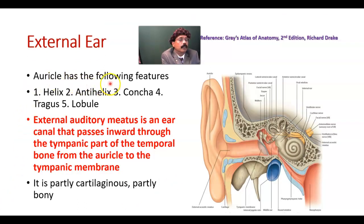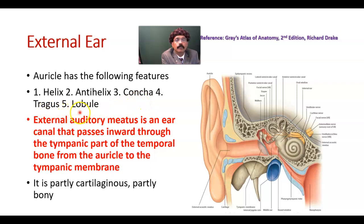The auricle has the following features: helix, anti-helix, concha, tragus, and lobule. The external auditory meatus is an ear canal that passes inward through the tympanic part of the temporal bone.